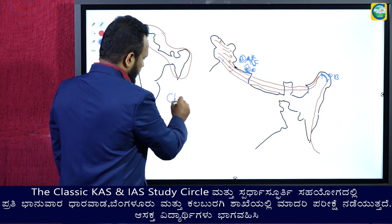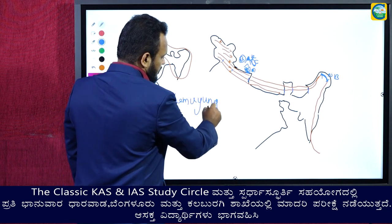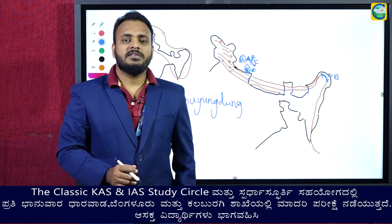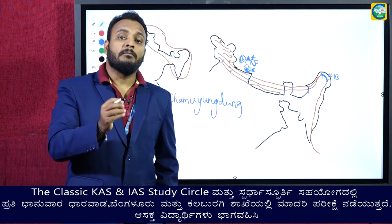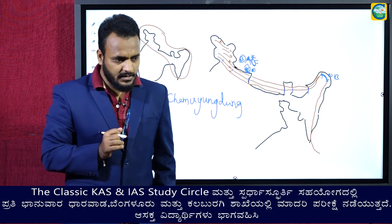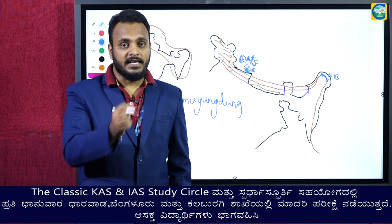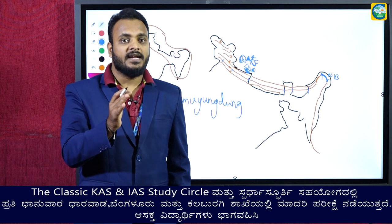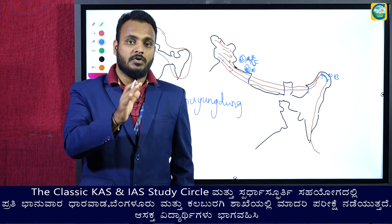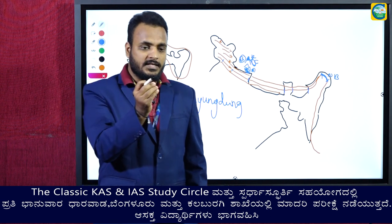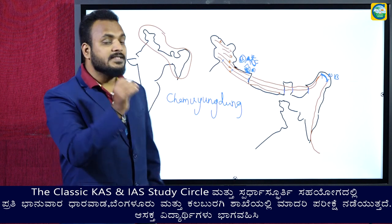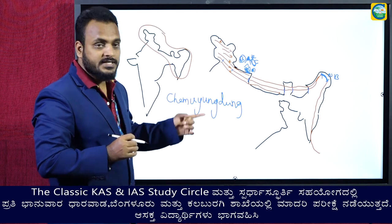Himalayan rivers are formed because of melting of glaciers and are also fed by southwest monsoon rainfall. As a result, Himalayan rivers are always perennial — they have water almost all year round throughout the year. Brahmaputra is one such perennial river.